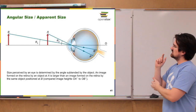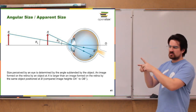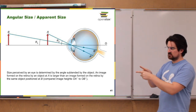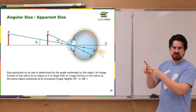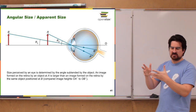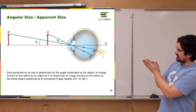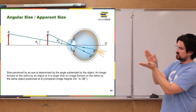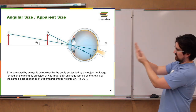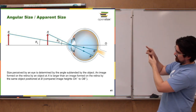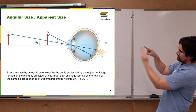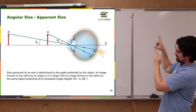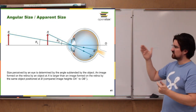Another concept we're going to need is apparent size, or angular size, which is generally used to indicate the magnification that an eye will see of an object. How many angles is that object taking up in my vision, or how large of an angle is that object taking up. The object at B takes up a certain angle, whereas if you move that object up to position A, it takes up a larger angle, so A has a larger apparent size than B.